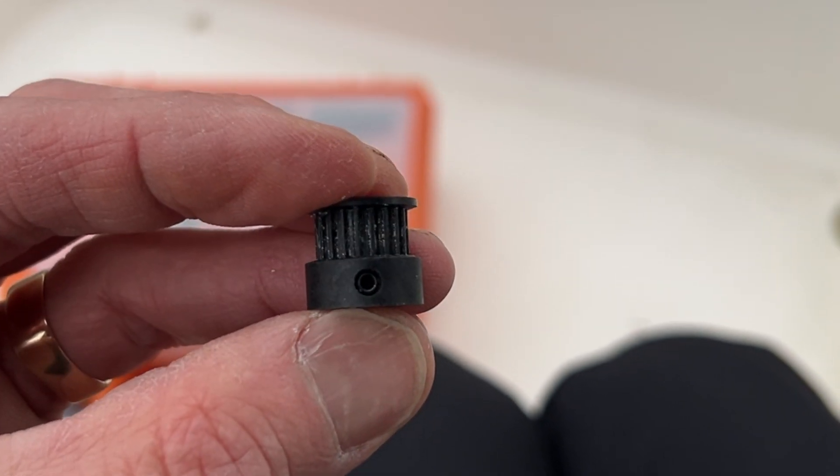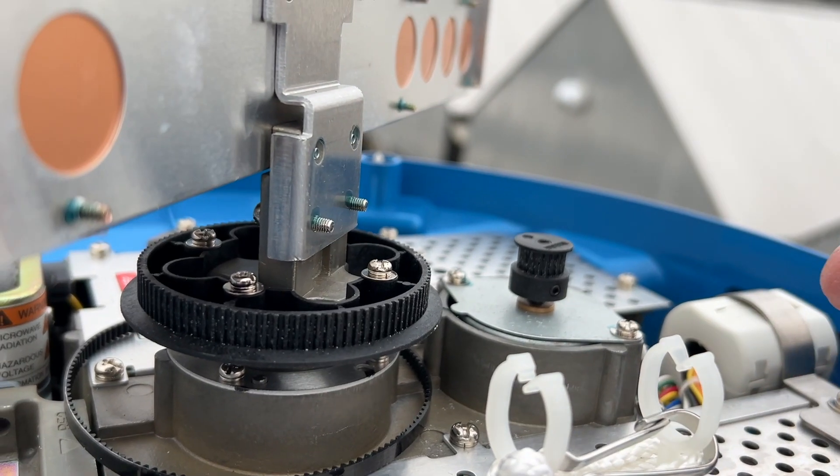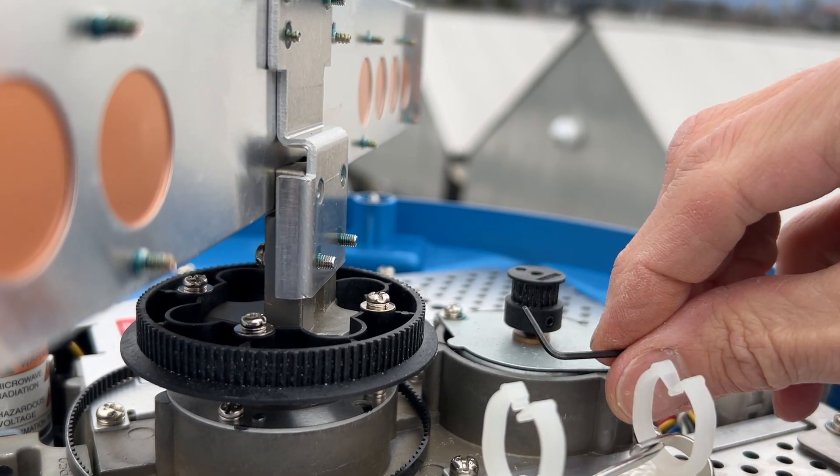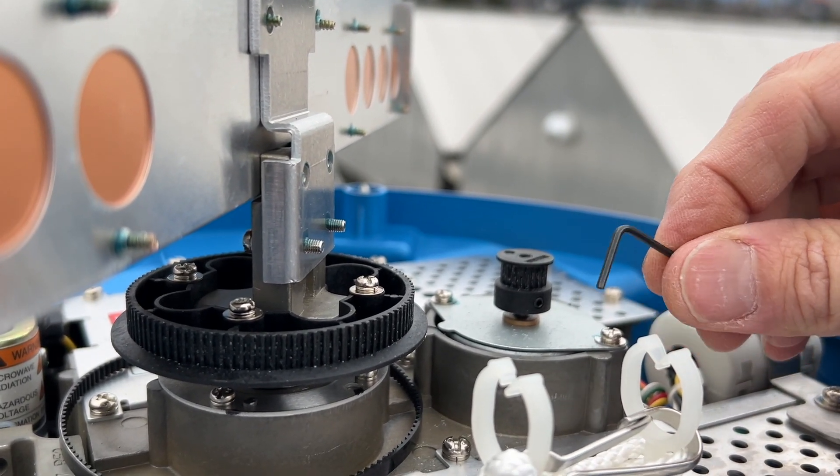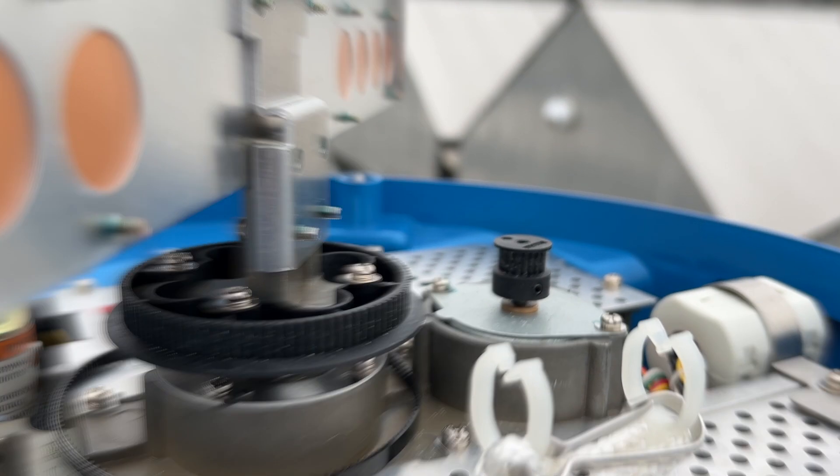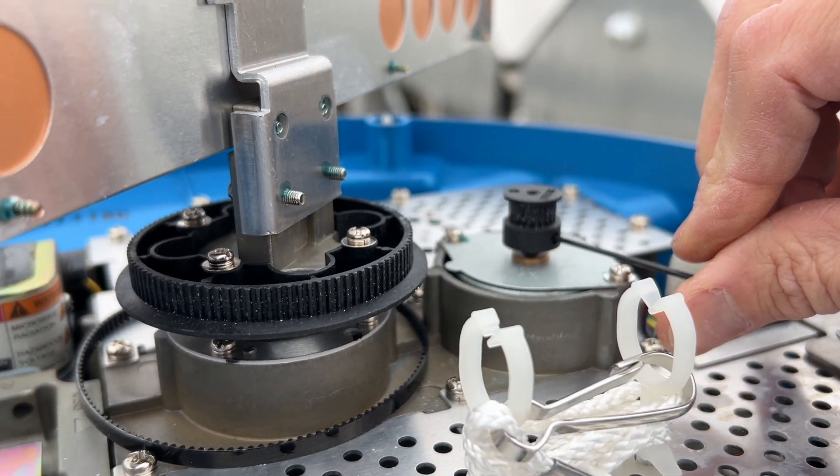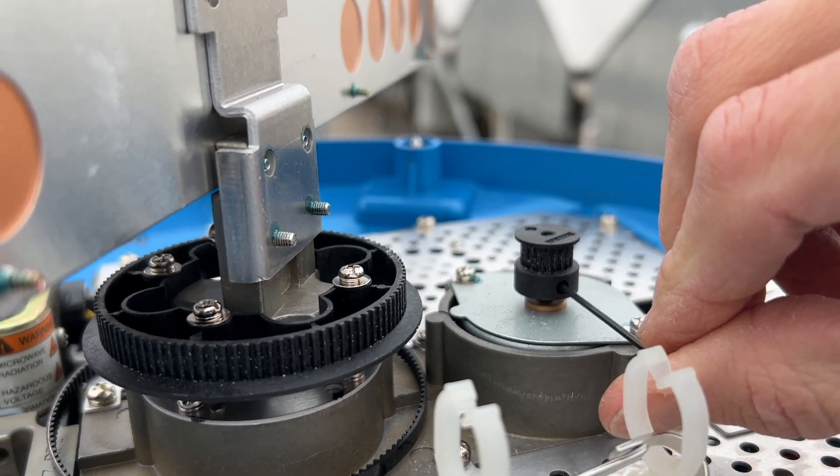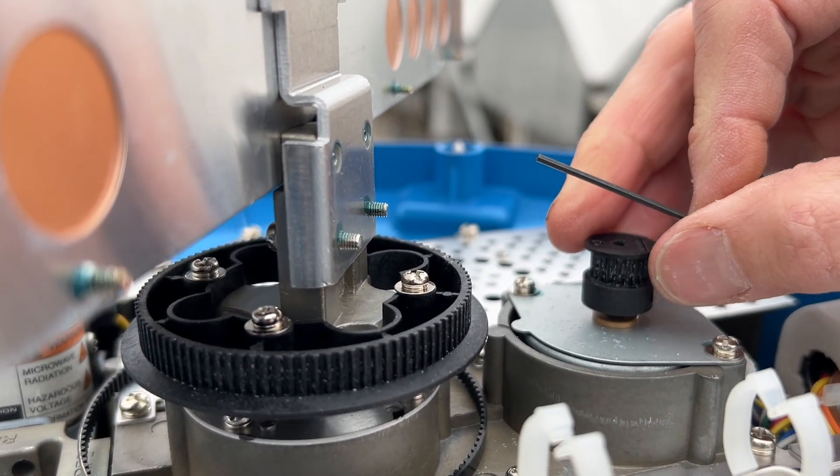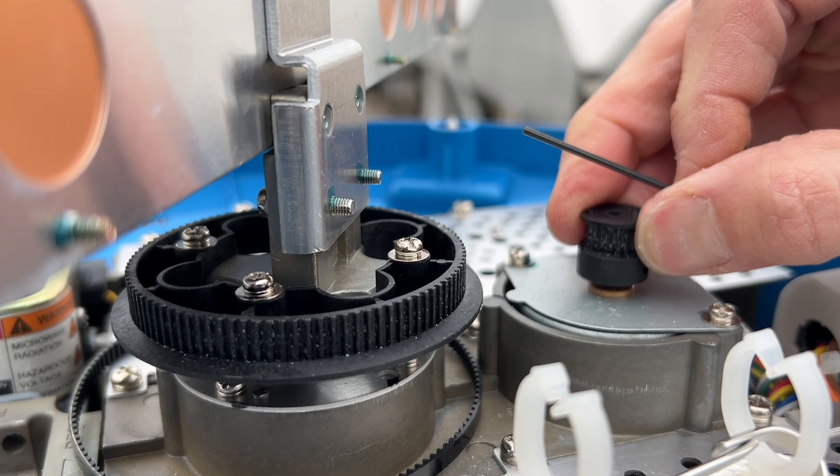I have determined it is a 1.5 millimeter allen key. To tighten this up I'm going to need both hands so I'll have to stop the camera. Alright, through the magic of film it's done. The 1.5 did the trick. It's tighter on there and it ain't coming up anymore.